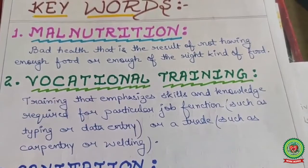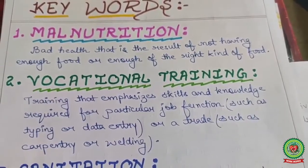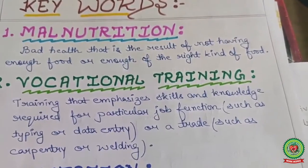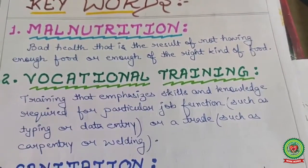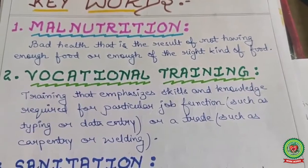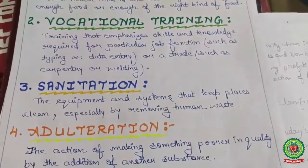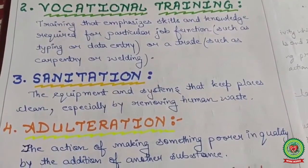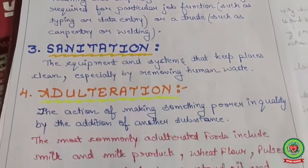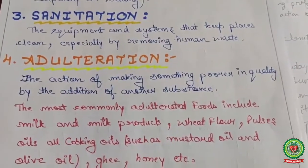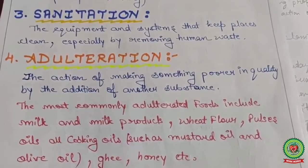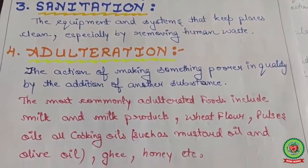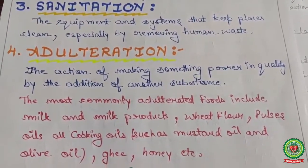In the case of a data operator, for example, typing speed is important. Third keyword: sanitation — the equipment and systems that keep places clean, especially by removing human waste. Fourth keyword: adulteration — the action of making something poor in quality by the addition of substances, such as stones mixed into pulses or water mixed into milk.